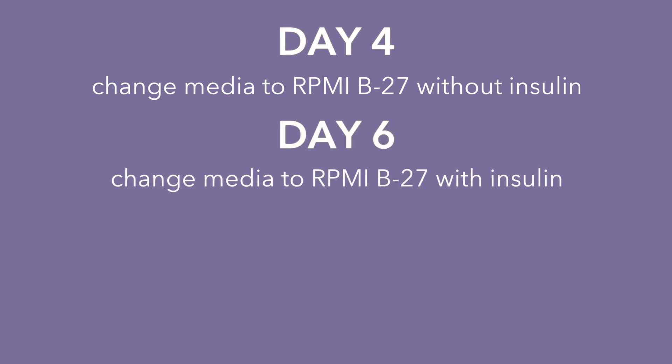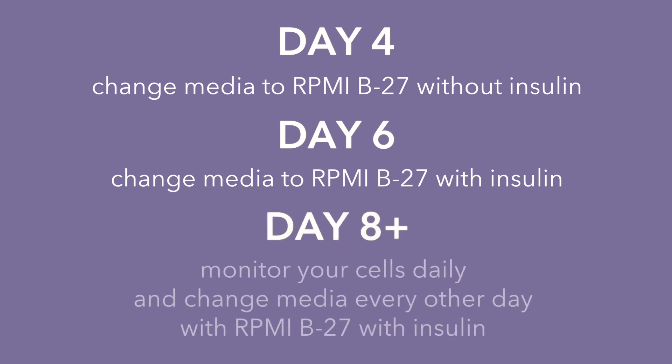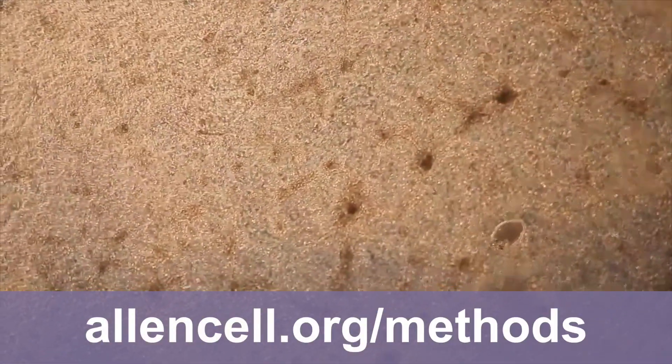The remaining steps of the protocol are media changes. On day four, you'll change the media to RPMI B27 without insulin. On day six, it's RPMI B27 with insulin. You'll want to monitor your cells daily and every other day change the media with the RPMI B27 with insulin. If the experiment was successful, you can expect to see beating cardiomyocytes at day seven. Our complete protocol is on our website, allensell.org slash methods. Thanks so much for watching and good luck with your experiments.